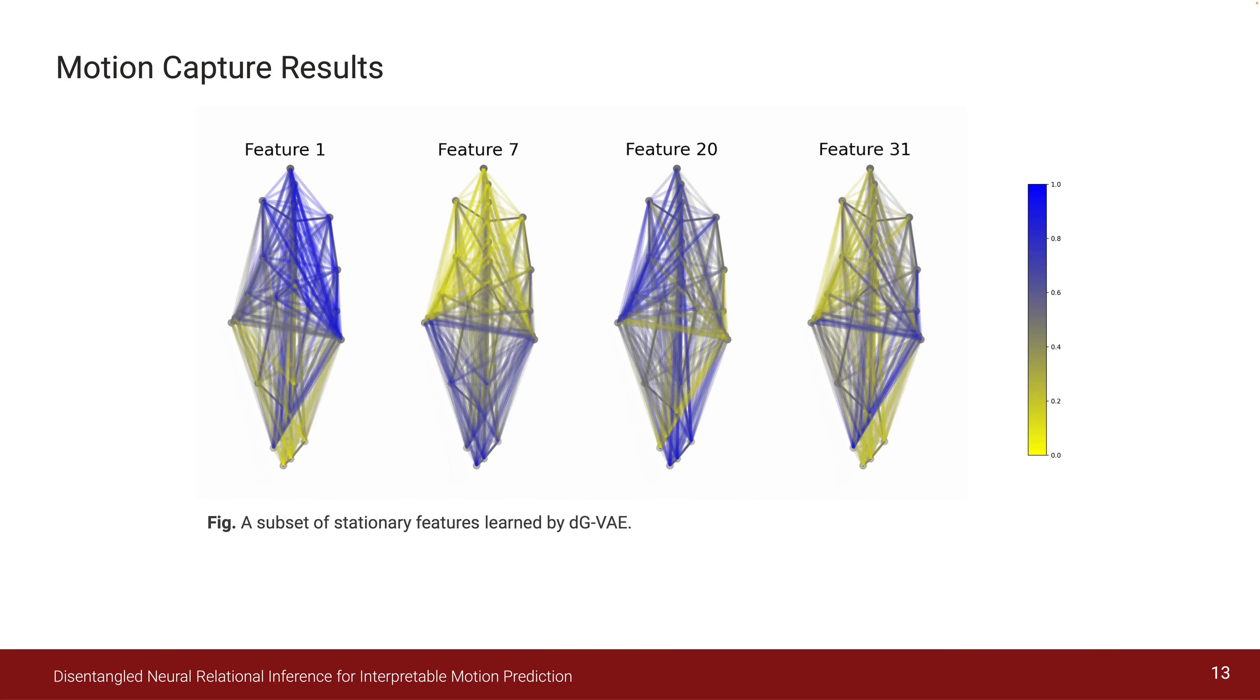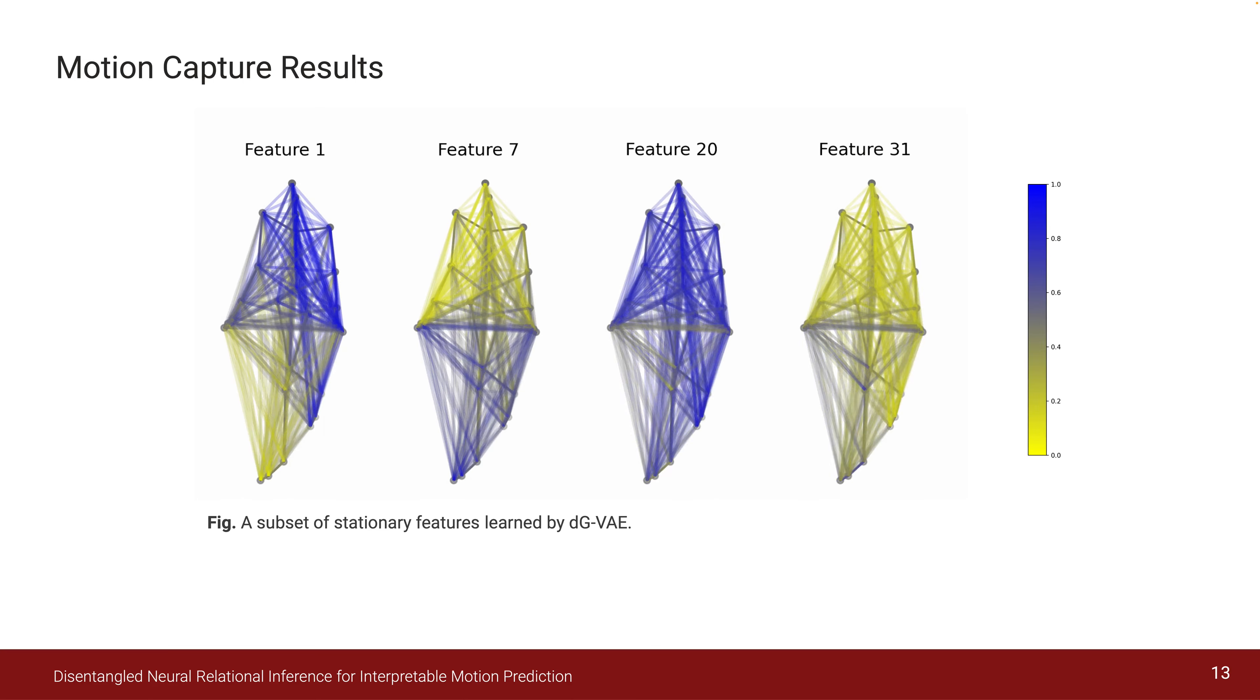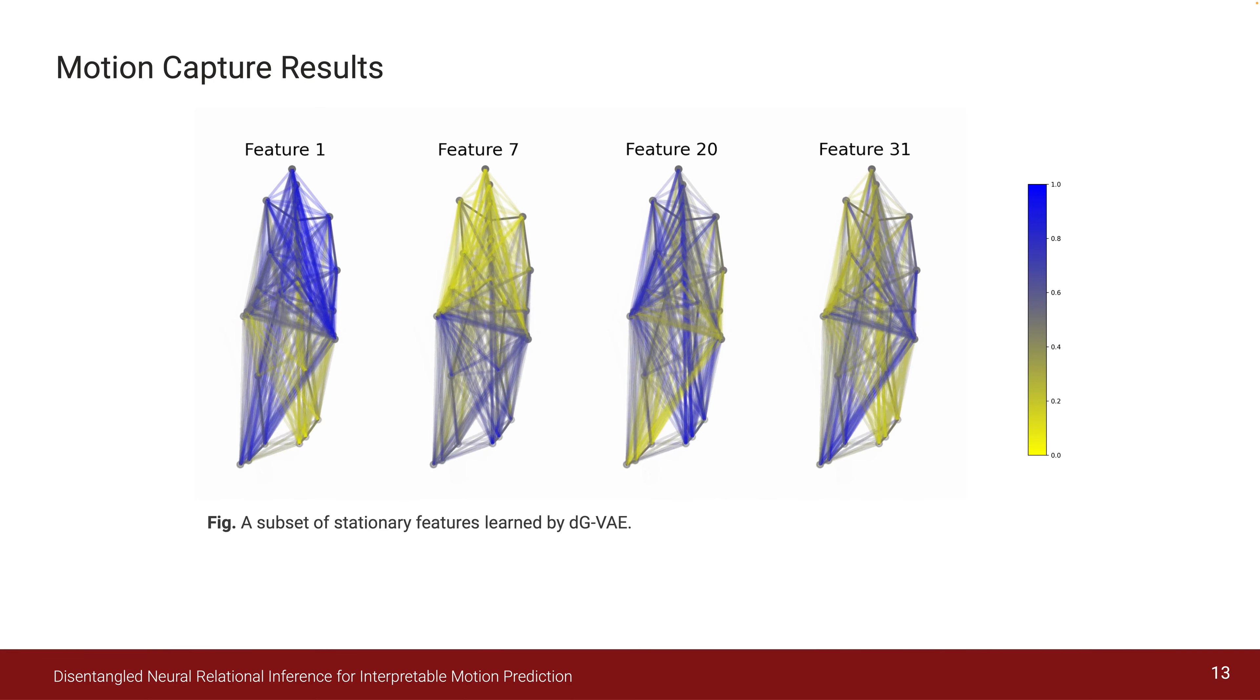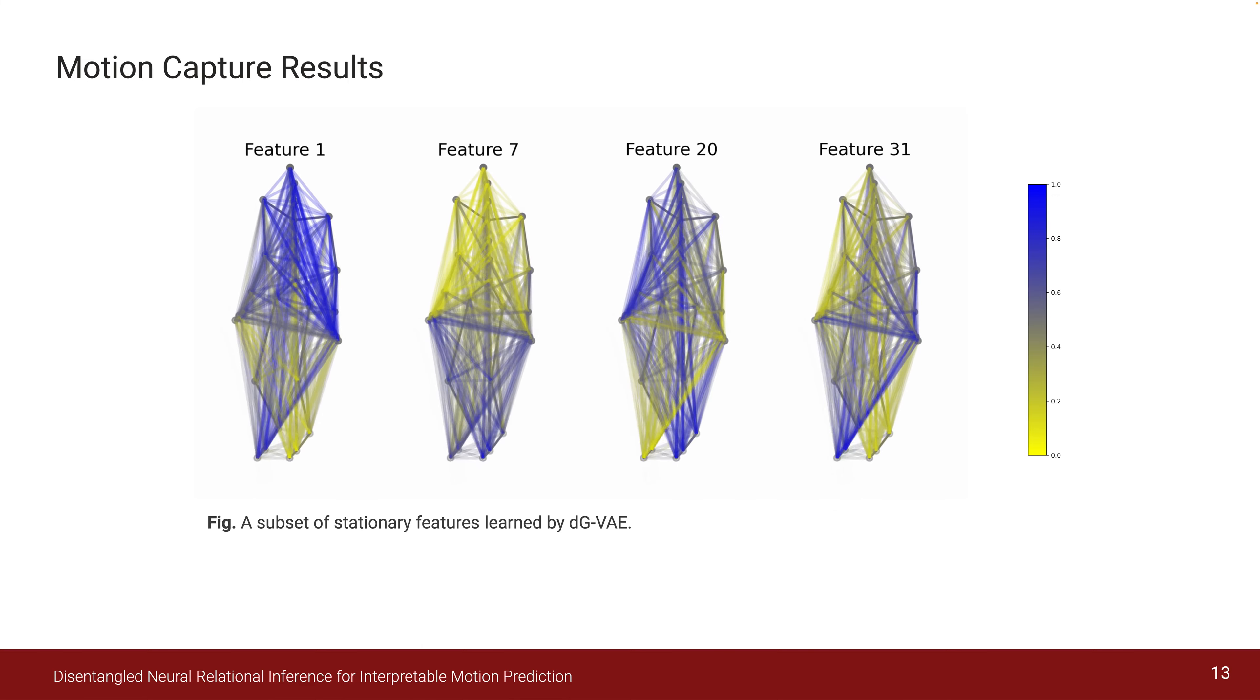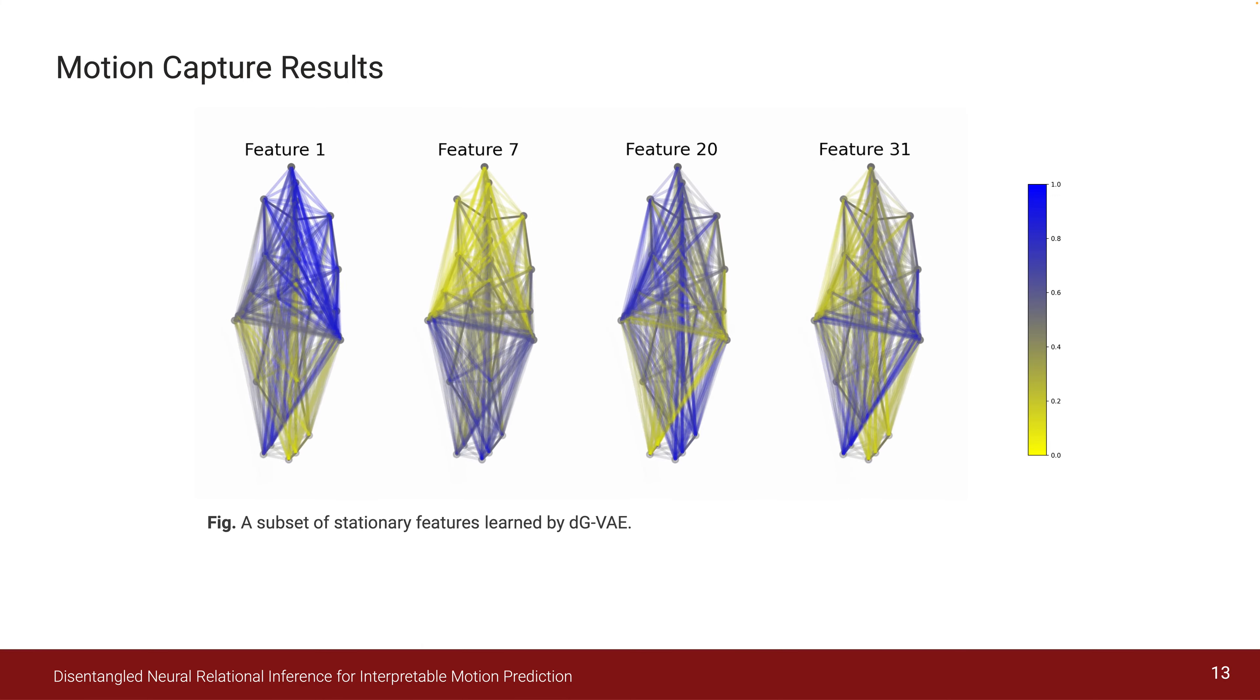The dynamic features on the other hand are less distinctively interpretable, but we note that they are kind of complementary—mostly the dark features in 31 are light in 20.